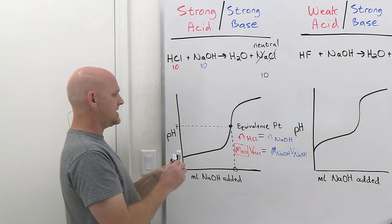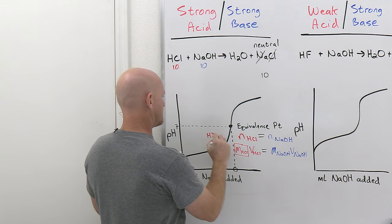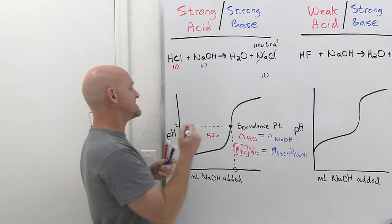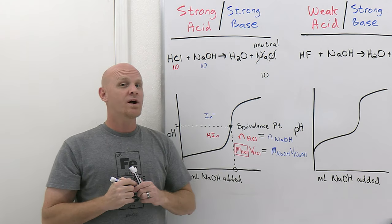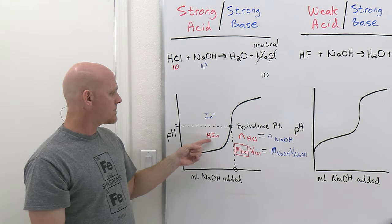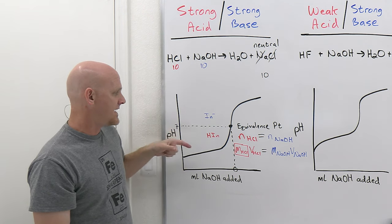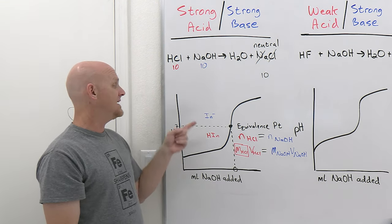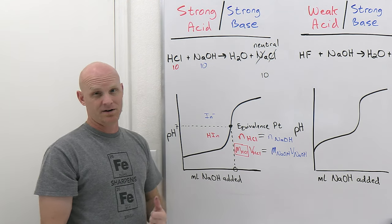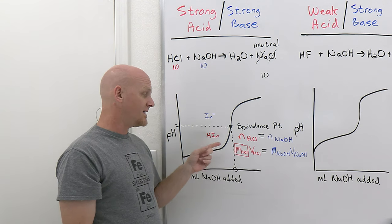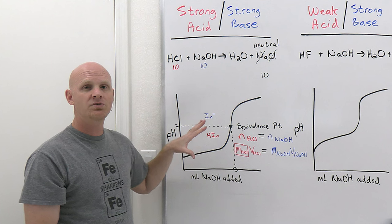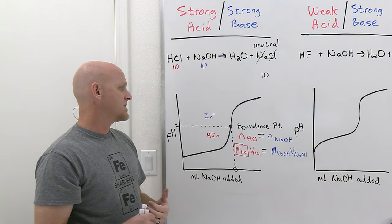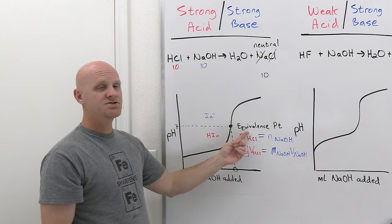Phenolphthalein itself is a weak acid — it has a weak acid form and a conjugate base form. As you add NaOH, it also gets titrated. In its acid form it's colorless, but in its conjugate base form it has a pinkish/purplish color. As you blow through the equivalence point — over the course of just an extra drop or two of NaOH — the solution goes from colorless to pinkish/purplish. Once that happens, you know you've reached the end of your titration, called the end point, which is your best approximation of the equivalence point.